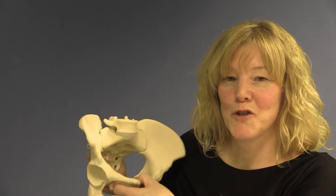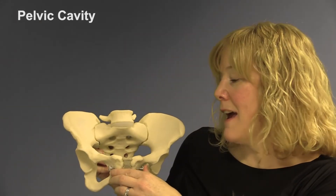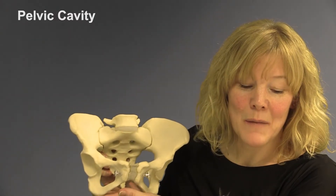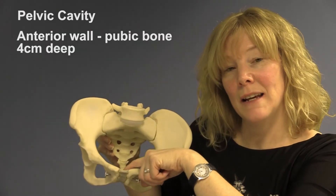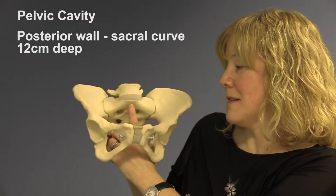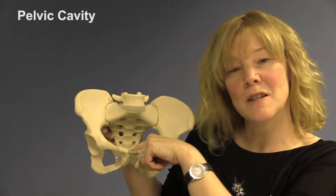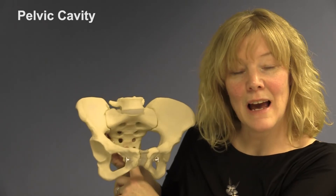The next landmark we have when we talk about the true pelvis is the cavity. Imagine the baby entering the brim and descending down into the cavity of the pelvis. The cavity is an area that extends between the brim and the outlet of the pelvis, and doesn't really have any defined anatomical landmarks other than that. The cavity is approximately four centimetres deep anteriorly, and approximately twelve centimetres from the sacral promontory down towards the outlet of the pelvis.